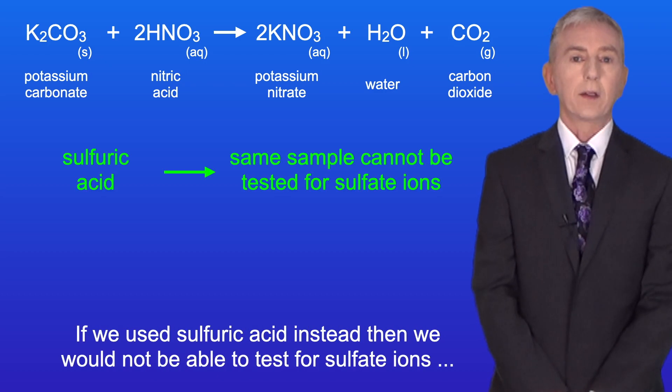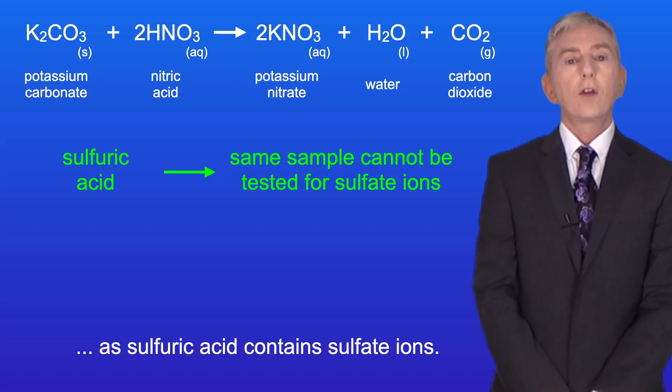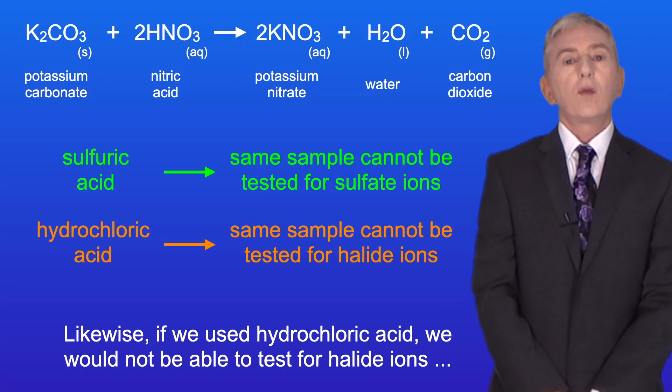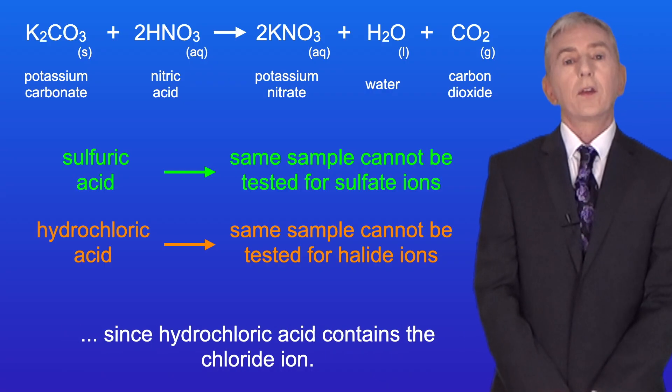If we used sulfuric acid instead then we would not be able to test for sulfate ions, as sulfuric acid contains sulfate ions. And likewise if we used hydrochloric acid we would not be able to test for halide ions, since hydrochloric acid contains the chloride ion.